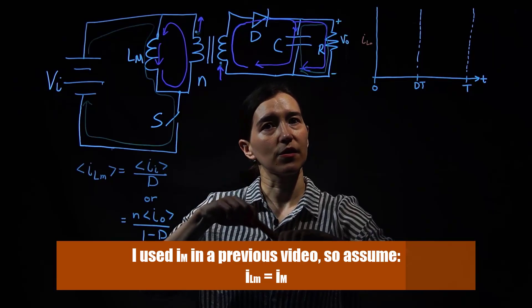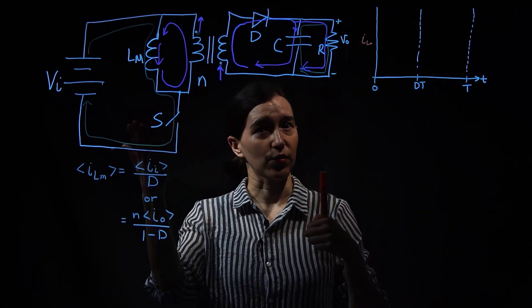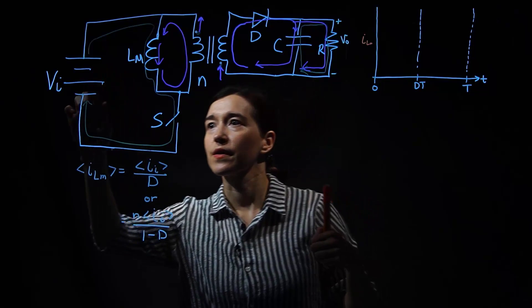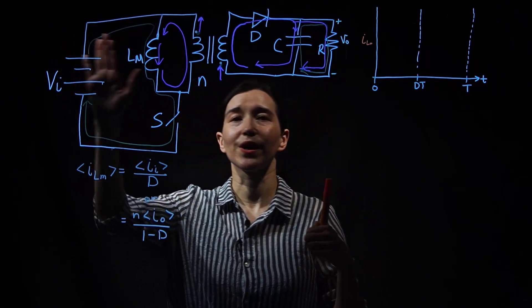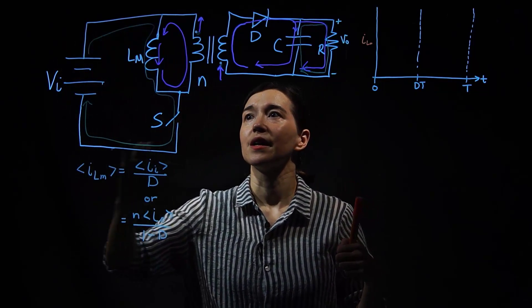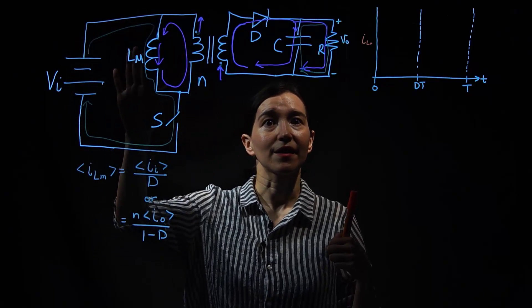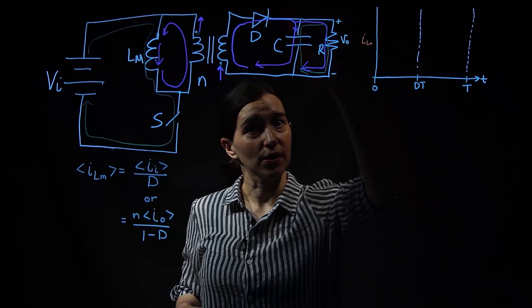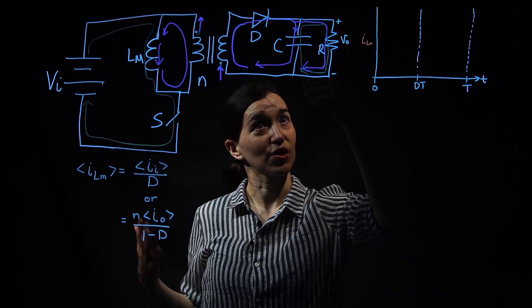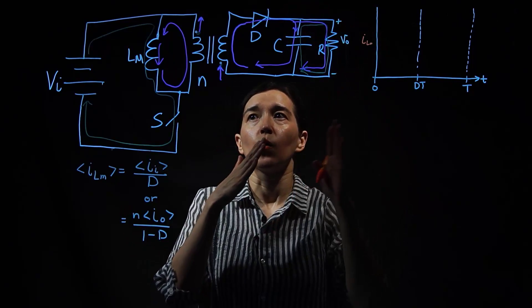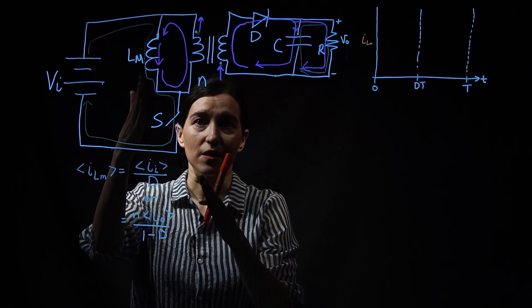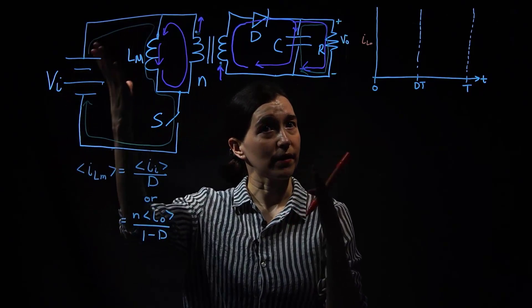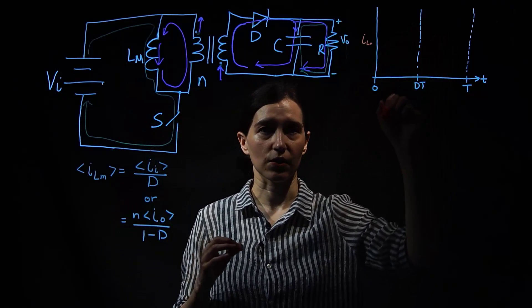So let's look at these two phases first when the switch is on and when it is off. So you can see this green curve here is showing when the switch is on. So we're charging up the magnetizing inductance here and the output capacitor is supplying current to the load. We're only focusing on this magnetizing inductance.